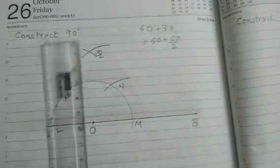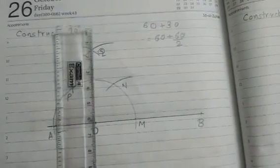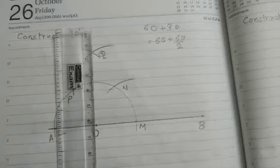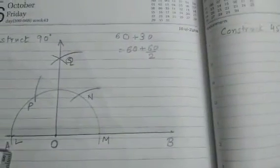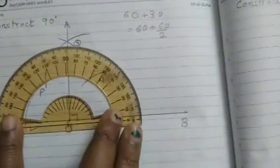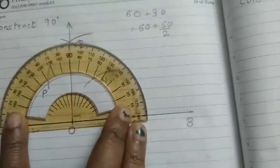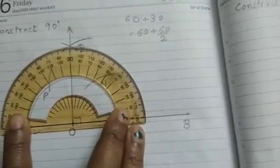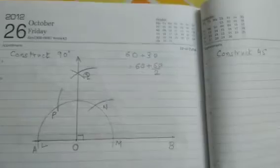So 90 degrees, if I join O and Q and extend it, will be 90 degrees. So I have extended, I have joined OQ and extended. This is 90 degrees. If you wish I can verify it. See, it is 90 degrees. Now to write the steps of construction.